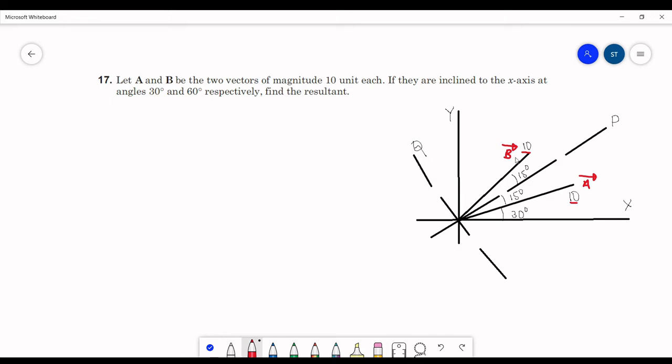If we consider the components of A and B along p, the component of A will be 10 cos 15 and the component of B is also 10 cos 15. So the total component along p will be equal to 20 cos 15.